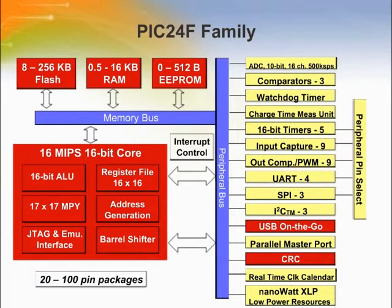Let's discuss the new changes in the PIC24F family — changes in the new architecture are shown in the red blocks. PIC24F MCUs now have a 16-bit core operating at 16 MIPS. The core has a 16-bit ALU and 16 16-bit file registers, also known as working registers or W registers. There is a 17×17 multiplier to help with math functions, and a barrel shifter has been added.